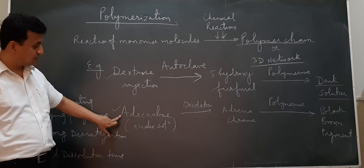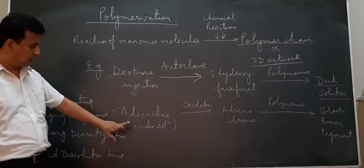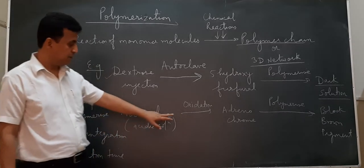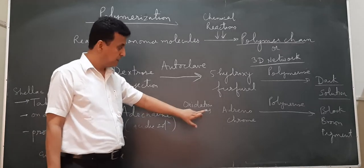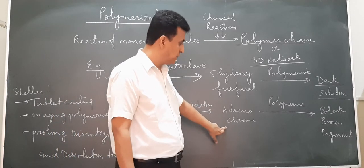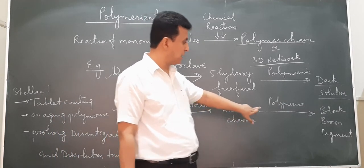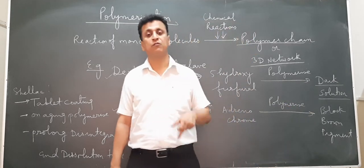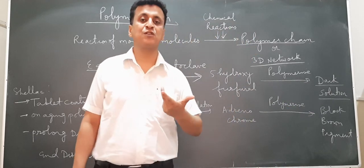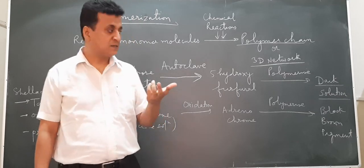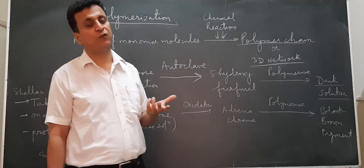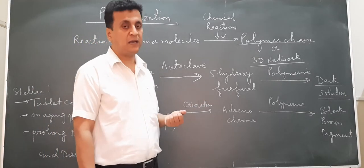Second example is adrenaline. In acidic solution after oxidation, it forms adrenochrome. This adrenochrome gets polymerized and a black-brown pigment is formed. Again, formation of pigment disturbs the physical stability of any formulation and will not be accepted.